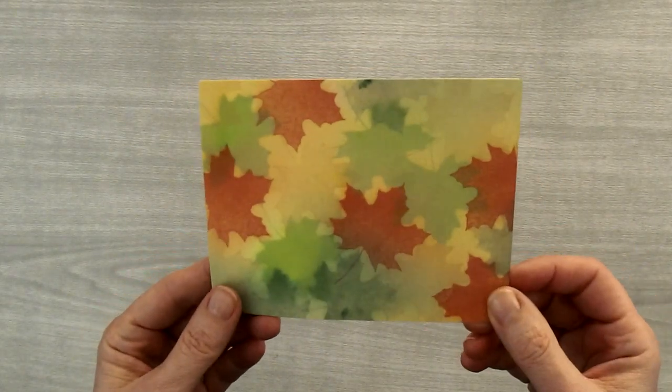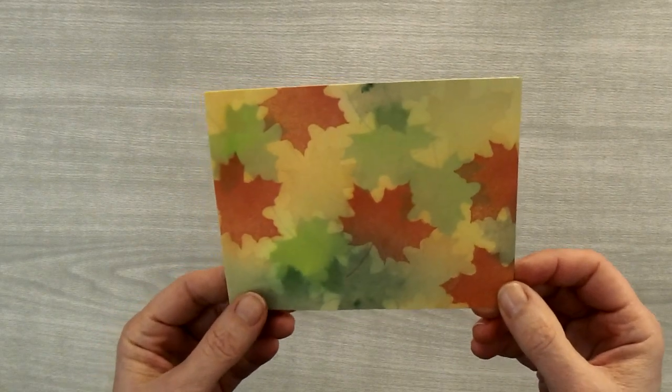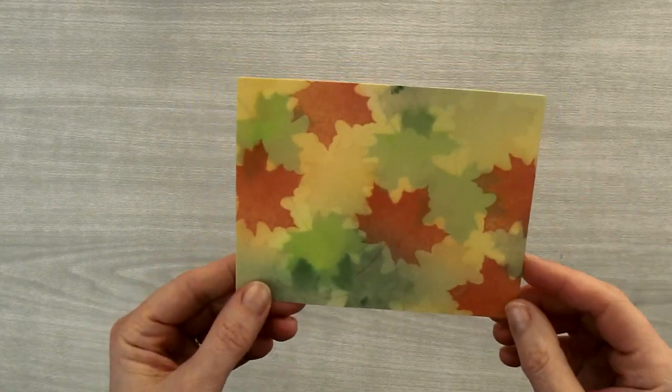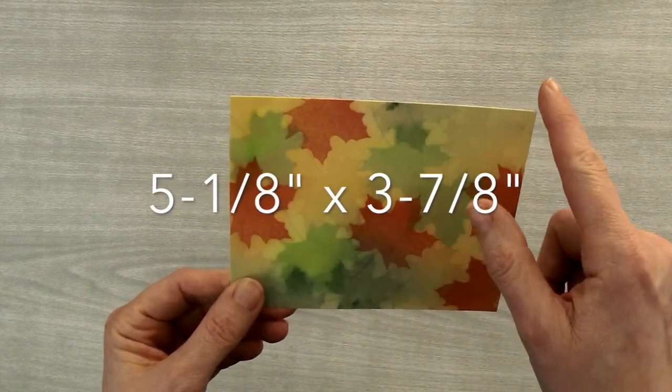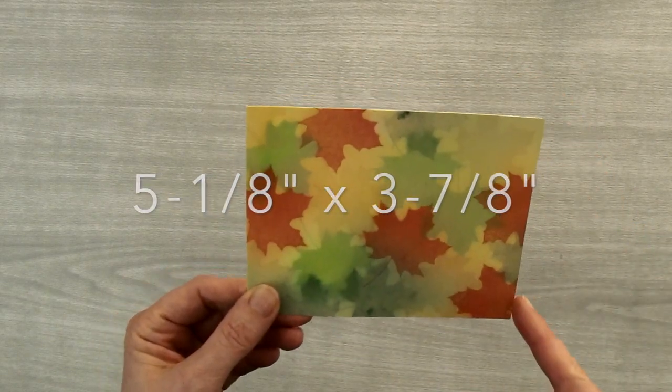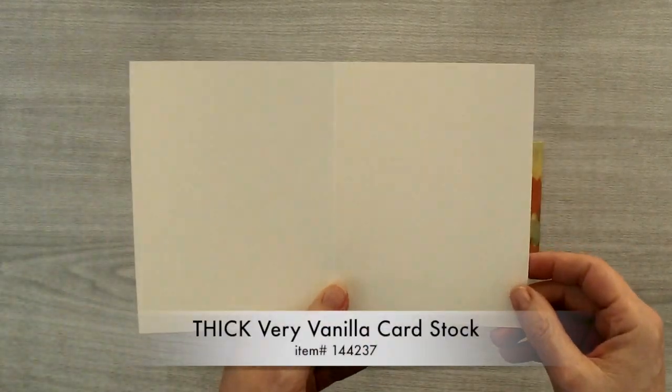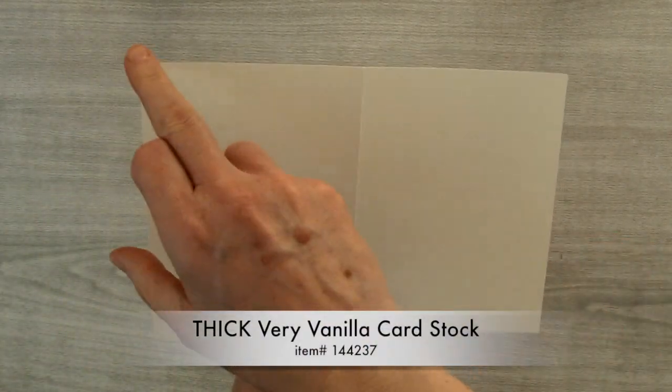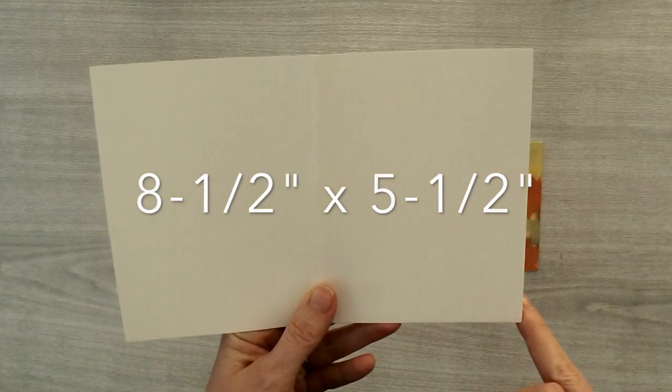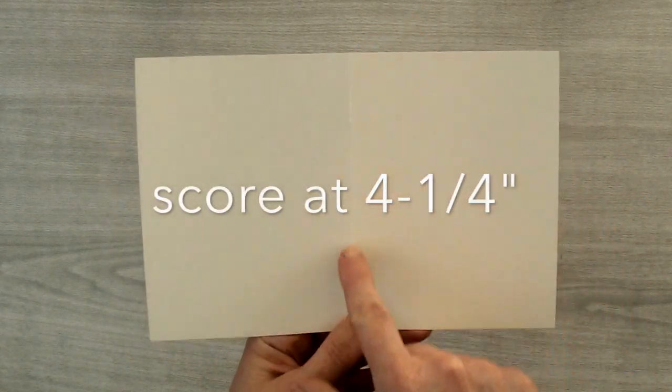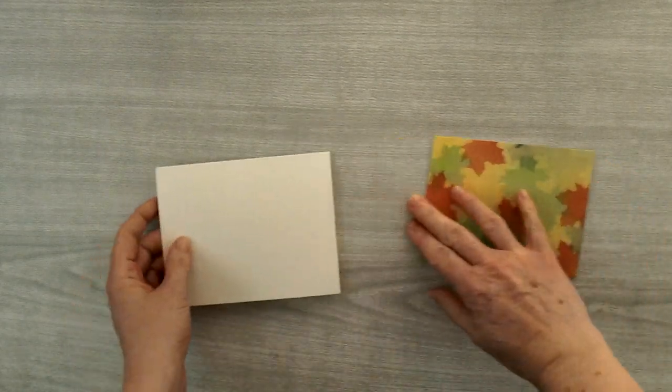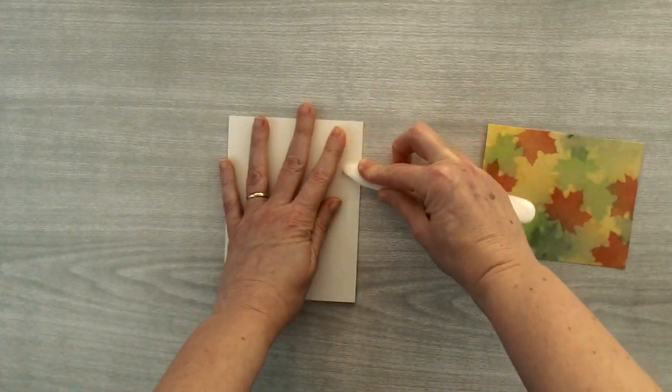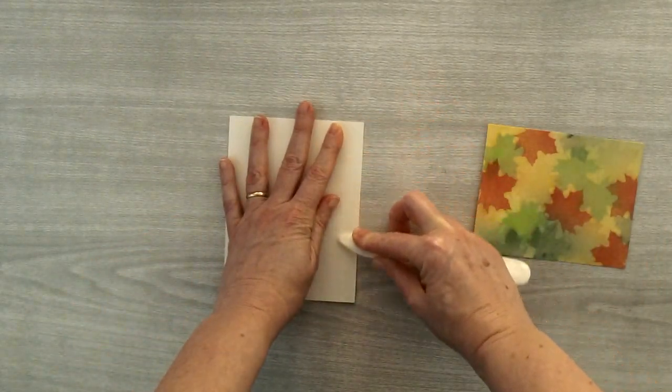And I cut my piece of cardstock down a little bit just to give it a nicer edge. So I cut this piece down to 5 1/8 inches by 3 7/8 inches. Then you're going to need a card base. I've cut a piece of cardstock to 8 1/2 inches by 5 1/2 inches and then I scored it in half at the 4 1/4 inch mark. Then I folded it in half. You can use your bone folder to smooth down that fold.